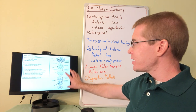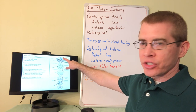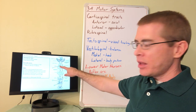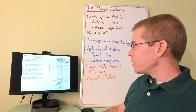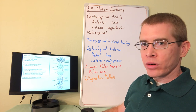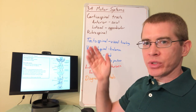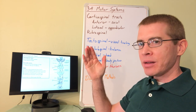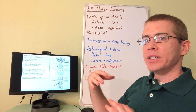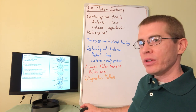The tectospinal tract, shown in blue, begins in the superior colliculus. It is an unconscious tract traveling through the MLF down to an interneuron and then the lamina 9 lower motor neuron. The tectospinal tract is responsible for reflexive gaze — when something flies into your peripheral vision and your eyes automatically snap to it, that is the tectospinal tract unconsciously moving your eyes to detect that new information.